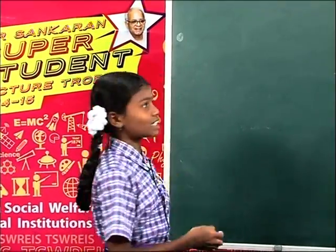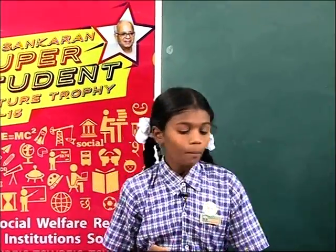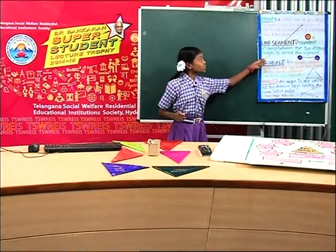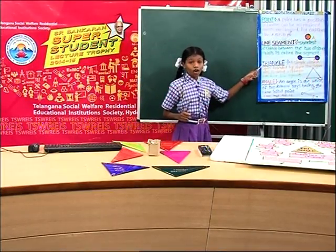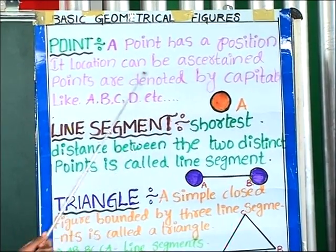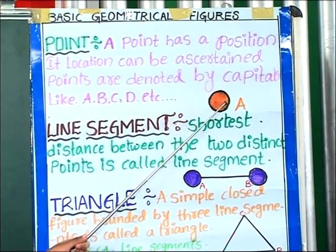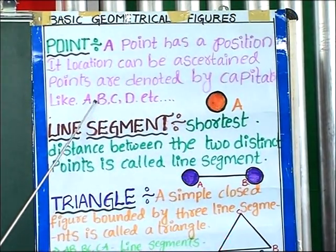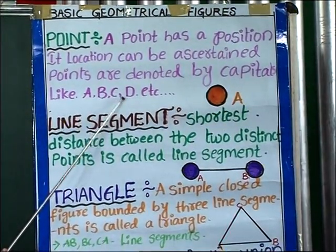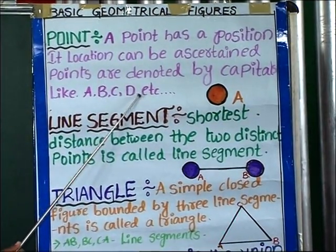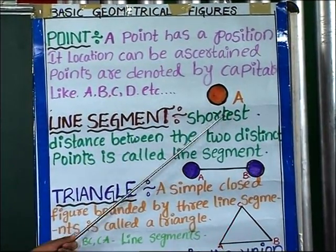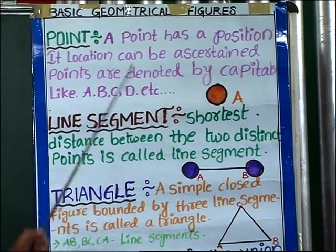Friends, do you identify what is this? This is a point. A point has a position. Its location can be ascertained. Points are denoted by capital letters like capital A, capital B, capital C, capital D, etc. Like this, we denote points.